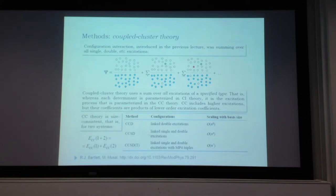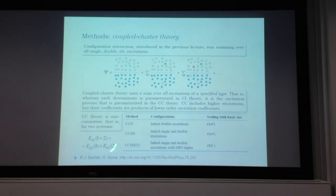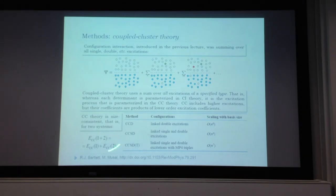Importantly, this is much cheaper computationally. And because the summation is carried out to infinity over all excitations of a given type, the problem of size consistency does not arise. When we put two systems together, no further excitations become available, so the problem becomes size consistent.